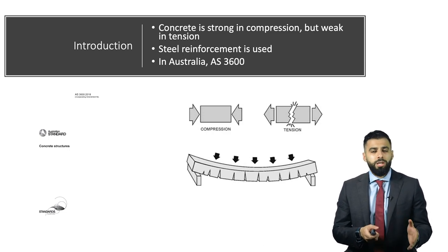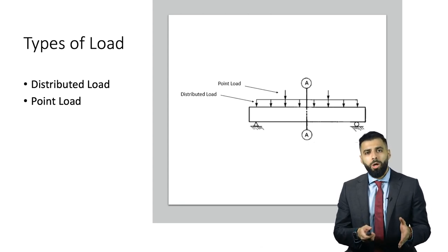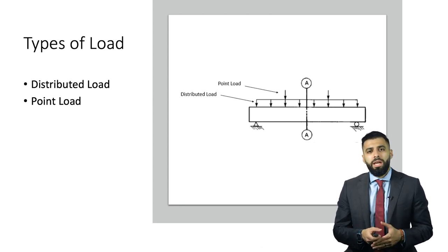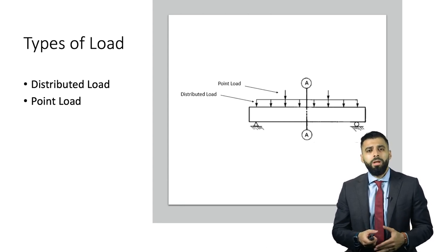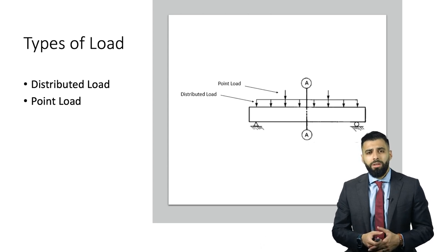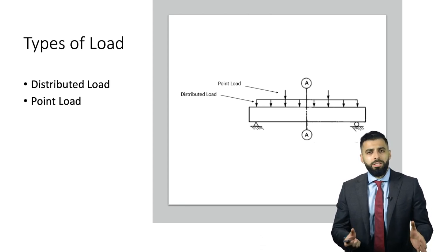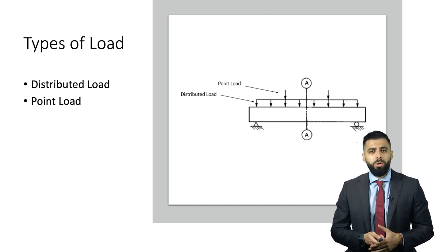The types of load are important when designing a concrete structure. There are two main types: point load and distributed load. A point load is, for instance, a load due to a column exerting a load on a slab. A distributed load would be, for instance, when designing a concrete water tank — the water inside exerts a pressure on the base of the tank, and that would be considered a distributed load.